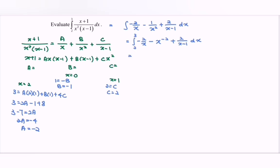Let's begin the integration. Integrating -2/x gives -2 ln|x|. Integrating -x to the negative 2: adding 1 to the power gives +1/x. Plus, integrating 2/(x - 1) gives 2 ln|x - 1|. With the domain from 2 to 3.